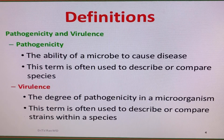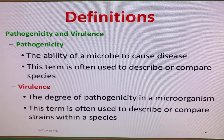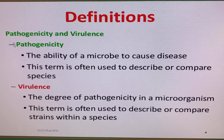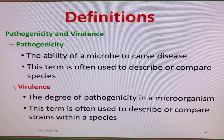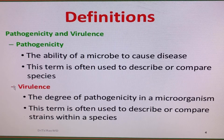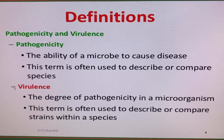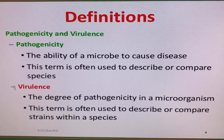Pathogenicity is the ability of a microbe to cause disease, and this term is often used to describe or compare species. Virulence is a term used to describe the severity of a disease after infection — the degree or extent of disease that a pathogen causes. It is also known as the degree of pathogenicity in a microorganism, and this term is often used to describe or compare strains within a species.